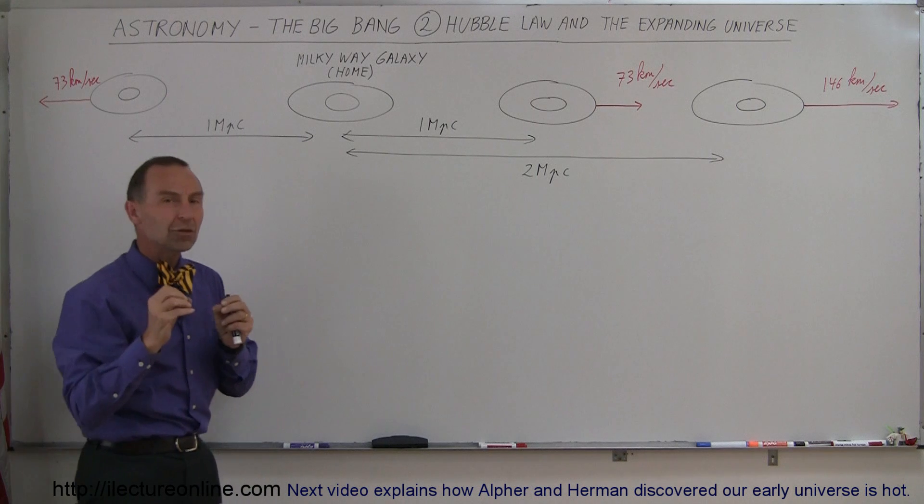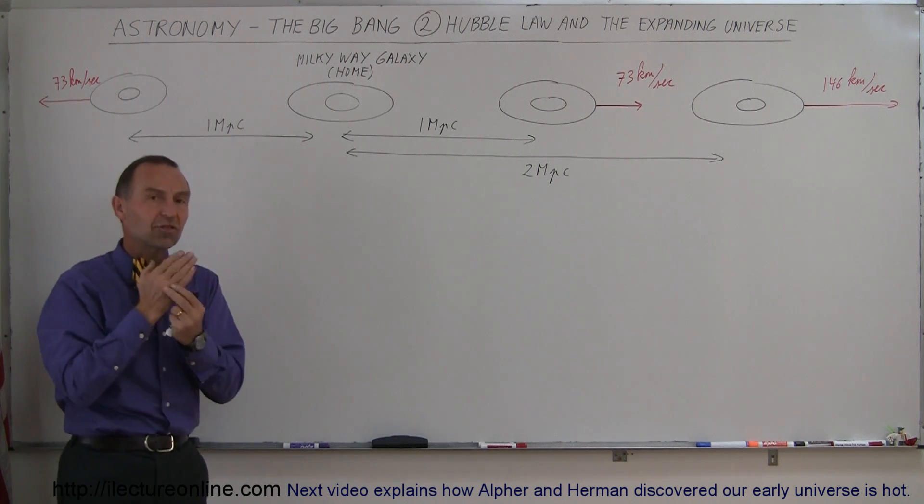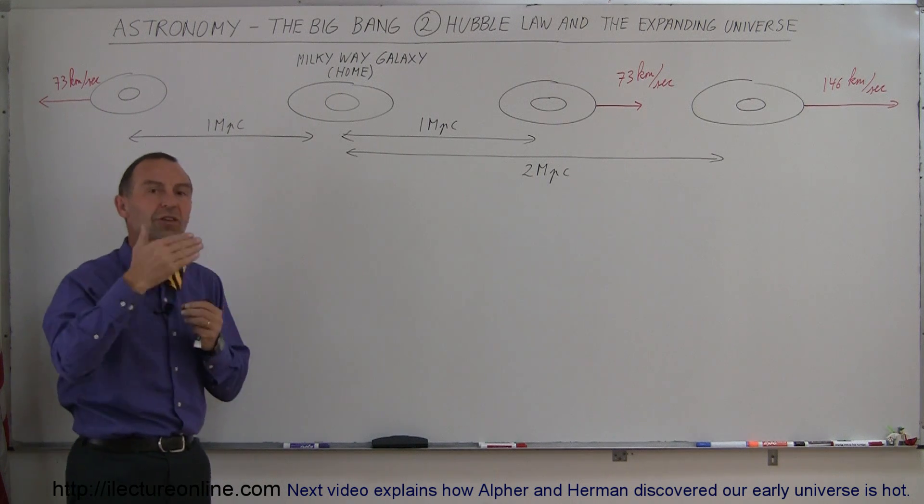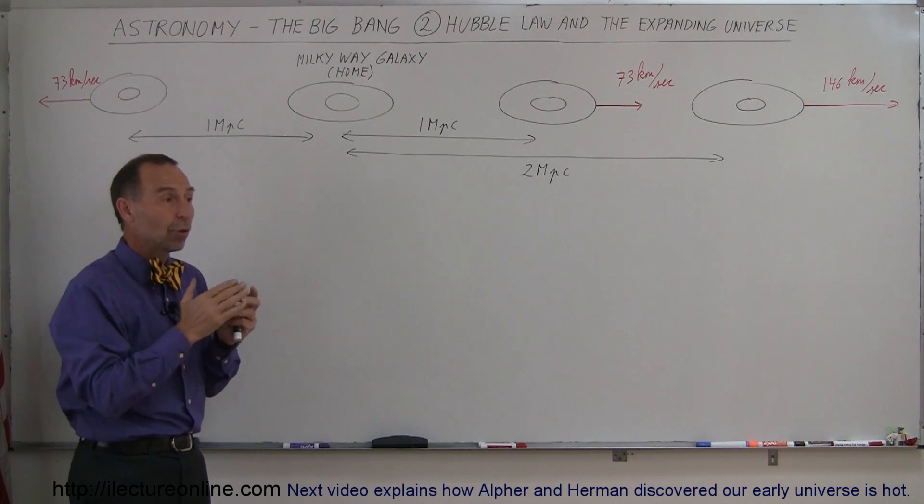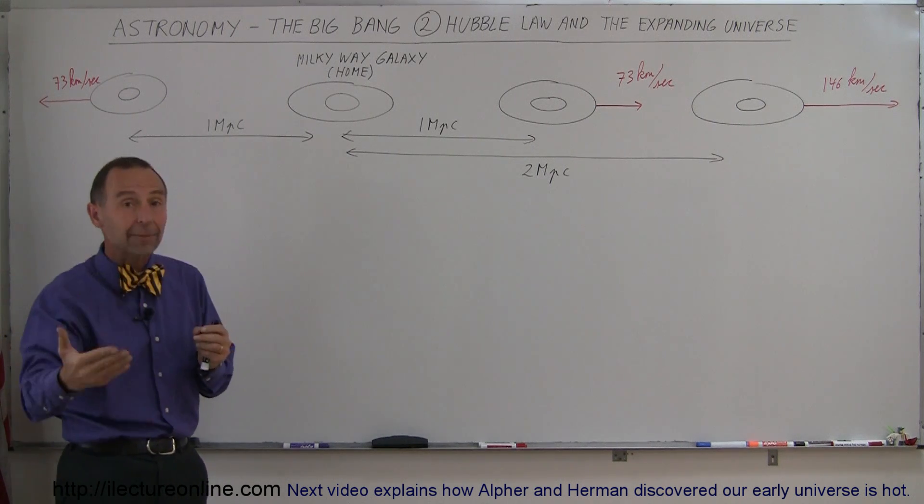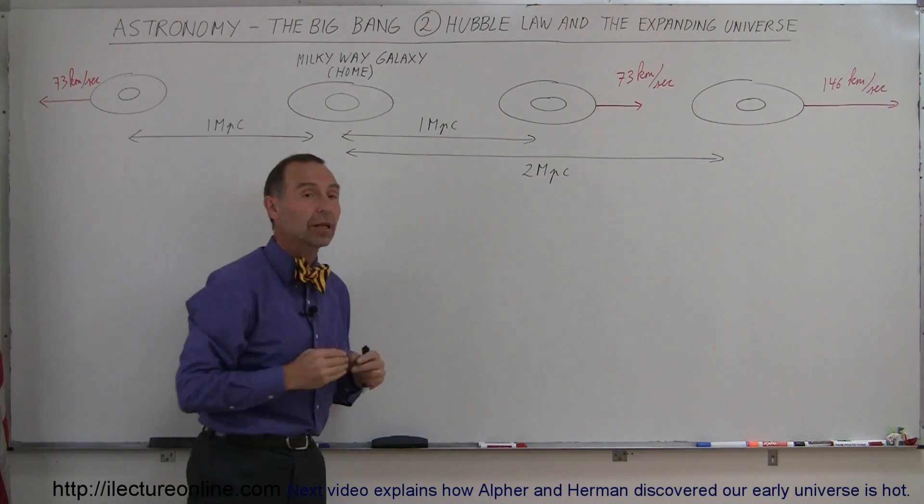But that was the key to Hubble's law. Hubble's law stated that the speed at which galaxies moved away from us was proportional to the distance they were away from us. So, if a galaxy was 10 times as far away from us, it would be moving at 10 times that speed, or 730 kilometers per second. Now, that had tremendous implications.